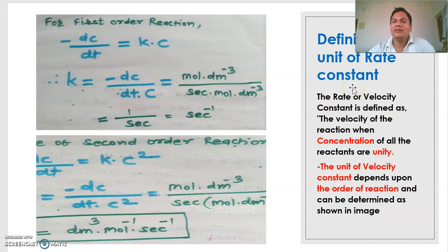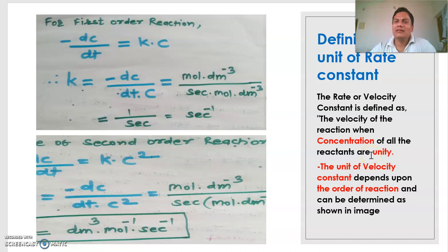We will see the definition and unit of rate constant. The rate constant is defined as the velocity of reaction when the concentration of all the reactants is unity. The unit of the velocity constant depends upon the order of reaction.